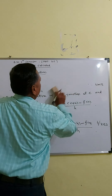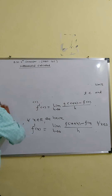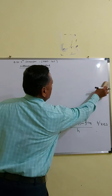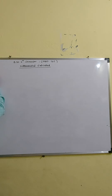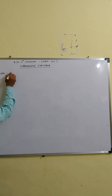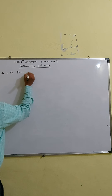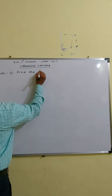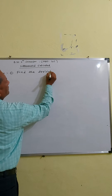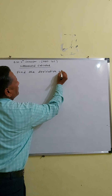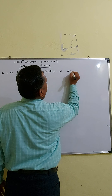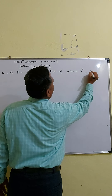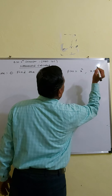Example number one: Find the derivative of F(x) = x², where x belongs to R.